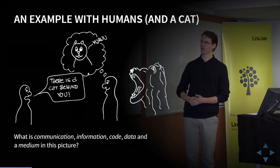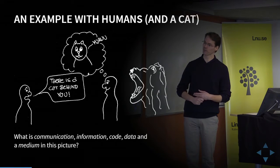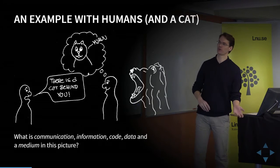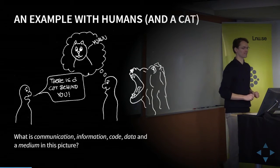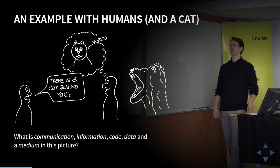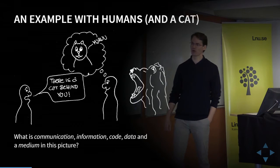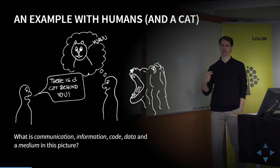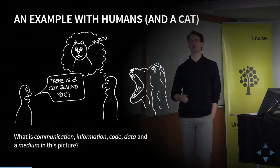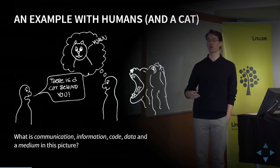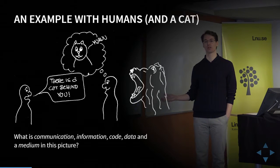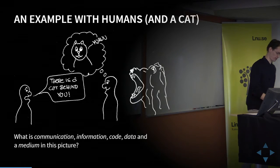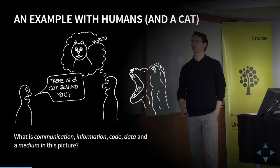If we were looking at this from a communication perspective, this would be a somewhat failed communication, because I do not think that the person on the right is receiving the message about a large cat — it seems more like a cute little kitten. But what is the code here? The code is the word choice, the grammar, the syntax of that which is spoken — 'there is a cat behind you.' That is the code, or the English language in this case. And 'there is a cat behind you' is the data — a specific instance of the code. And the medium, of course, is the air between the persons, that carries the sound waves from the mouth of one to the ear of the other.